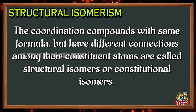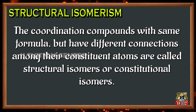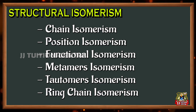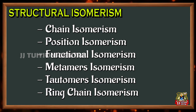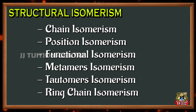Structural isomers: coordination compounds with the same formula but having different connections among their constituent atoms are called structural isomers or constitutional isomers. Most probably, structural isomerism is applied in organic chemistry, where it is classified into the following types: chain isomerism, position isomerism, functional isomerism, metamer isomerism, tautomer isomerism, and ring-chain isomerism.